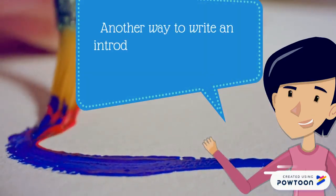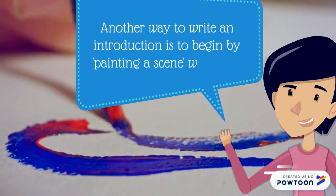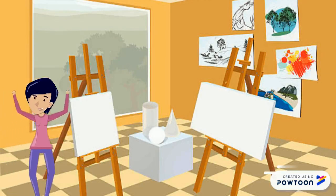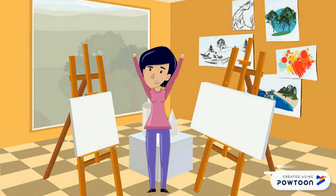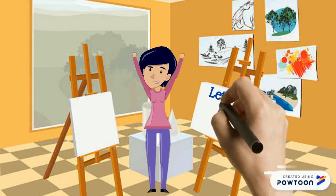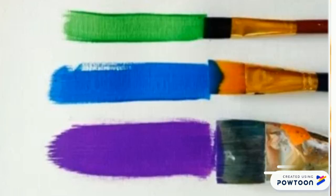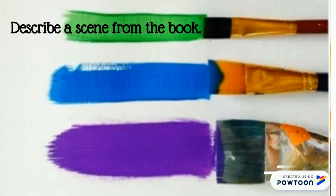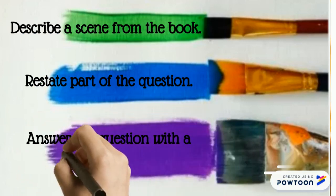Another way to write an introduction is to begin by painting a scene with your words, helping your audience see the setting of your text. To do this, you will describe a scene from the book, restate the question, and then answer the question with a focused answer.